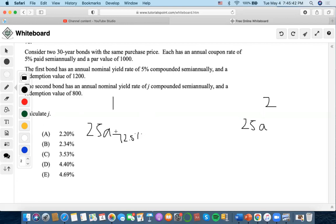And then 30 years times 2 is 60, right? Plus redemption $1200, b to the 60. And then 60 periods at rate j compounded semi-annually, plus redemption value of $800, b to the 60.